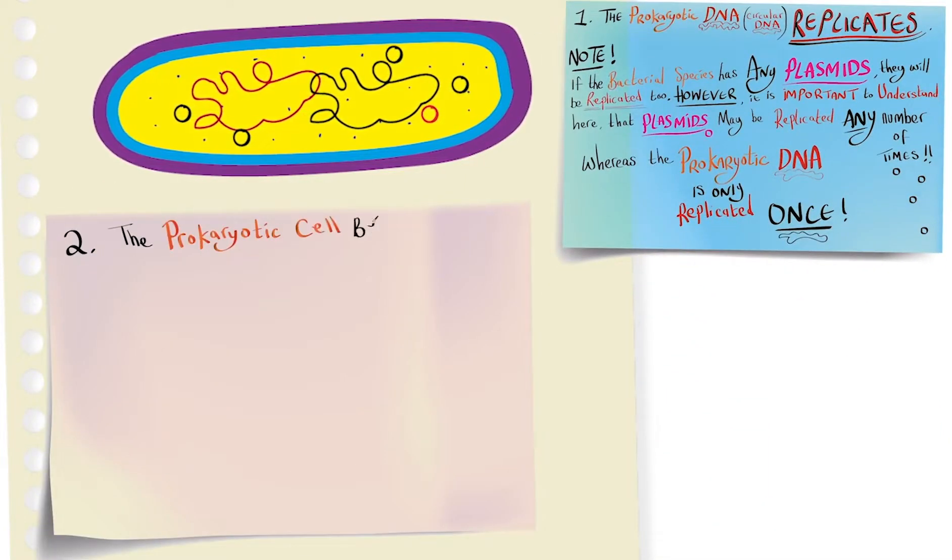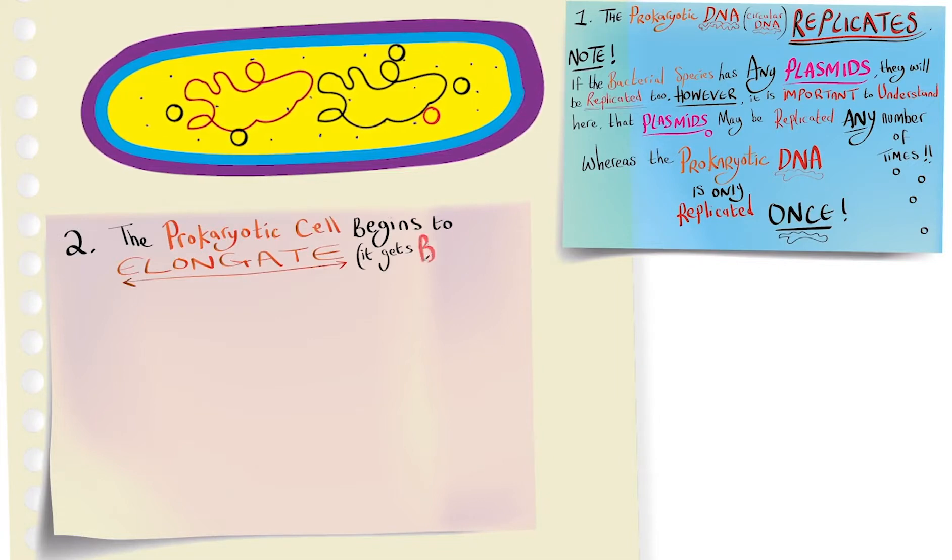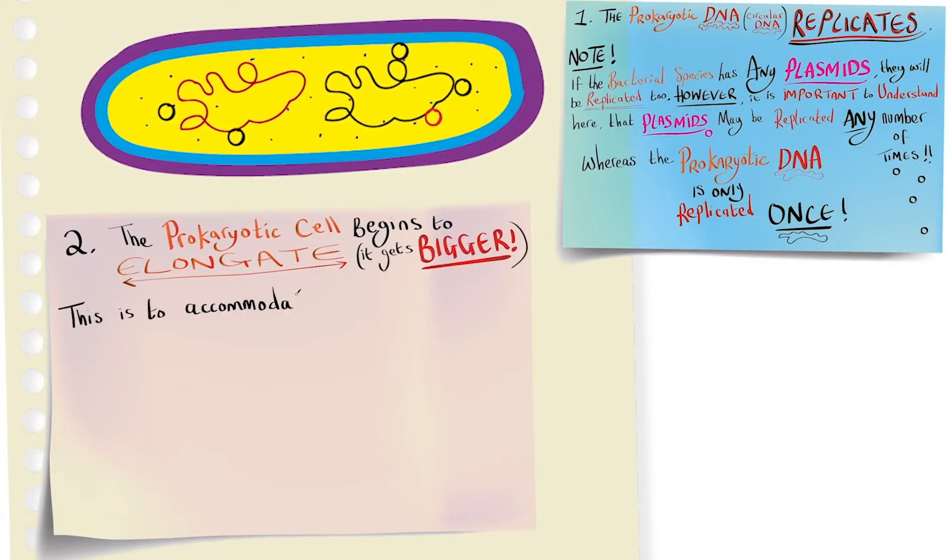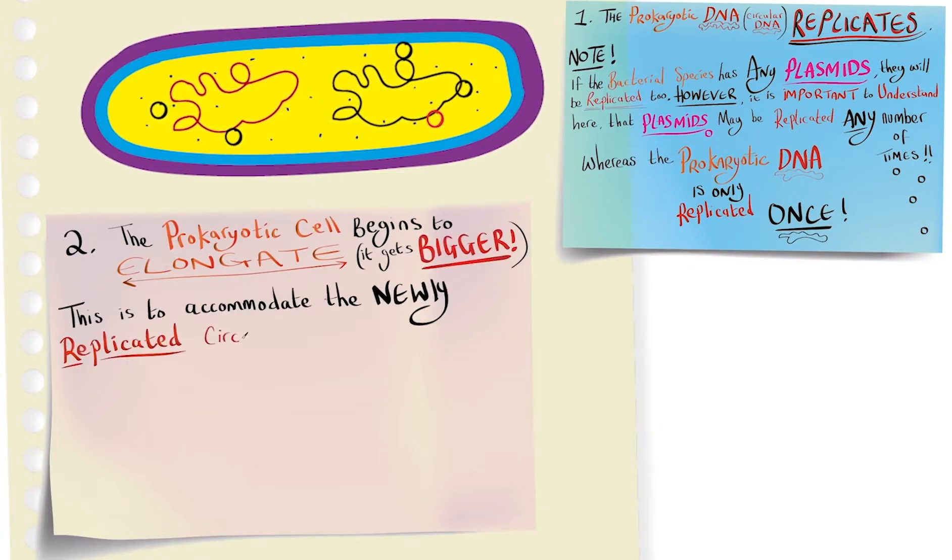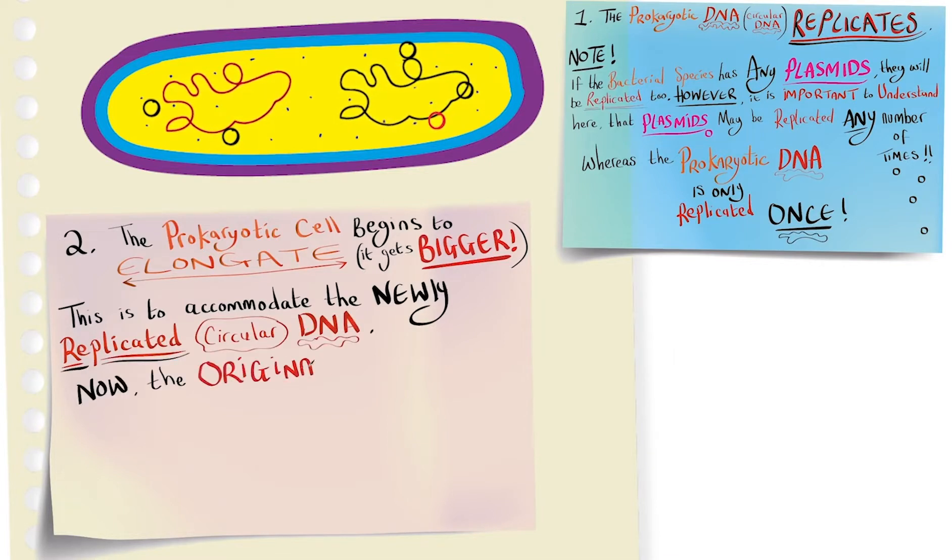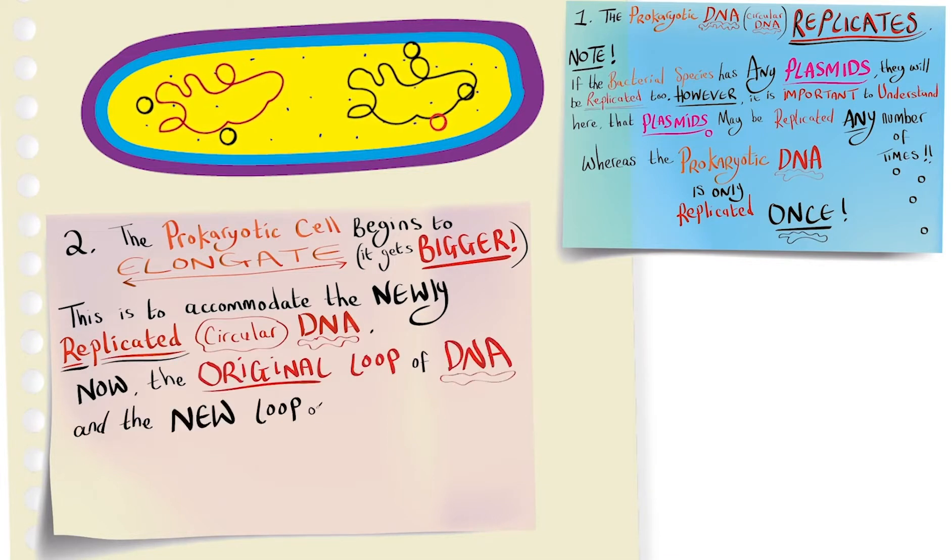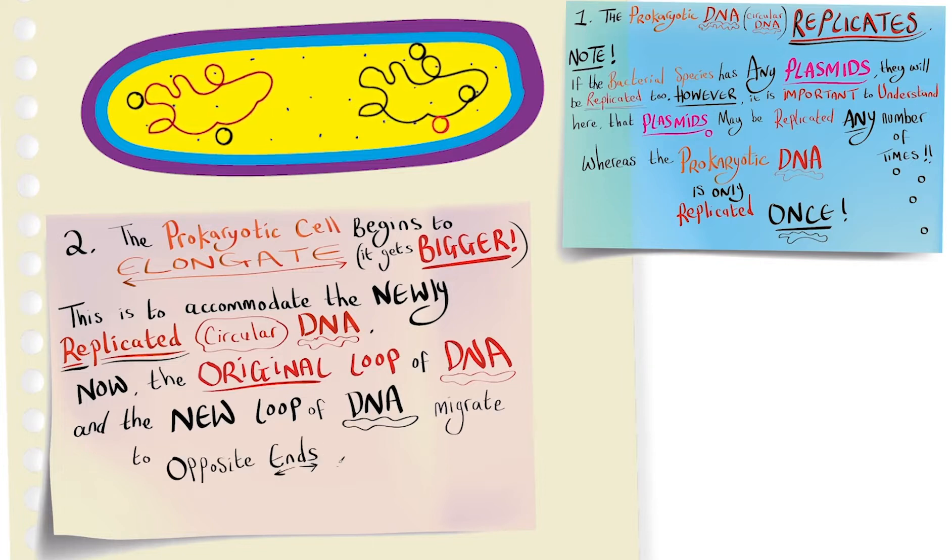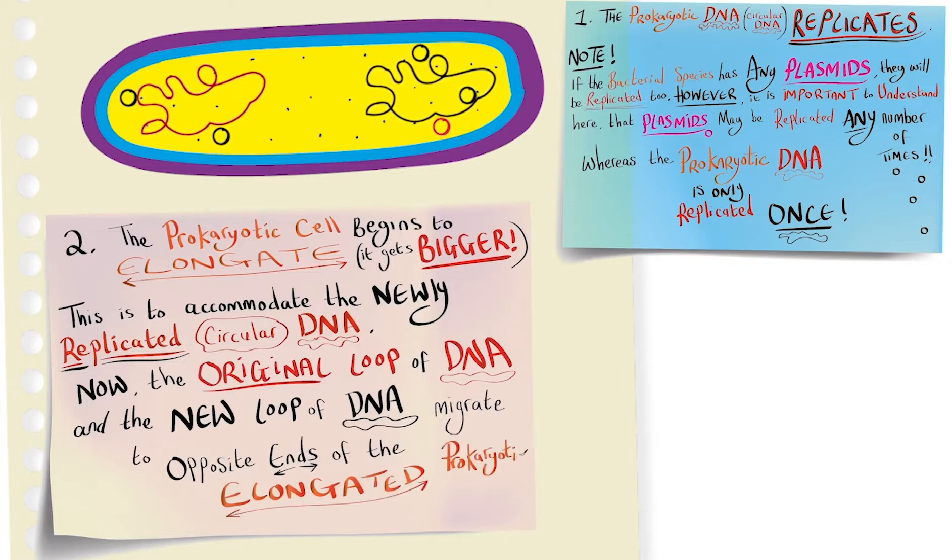In step two, the prokaryotic cell begins to elongate, it gets bigger. This is to accommodate the newly replicated circular DNA. Now the original loop of DNA and the new loop of DNA can migrate to opposite ends of the elongated prokaryotic cell.